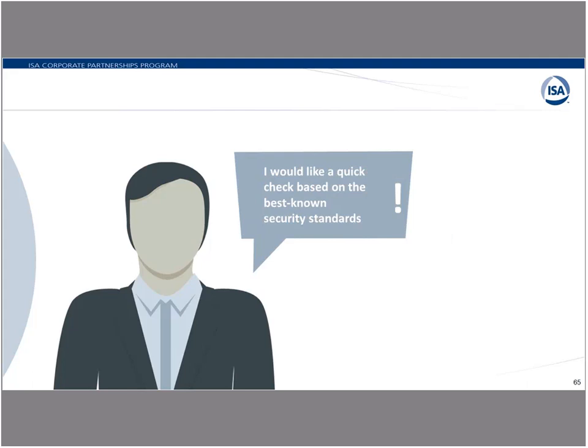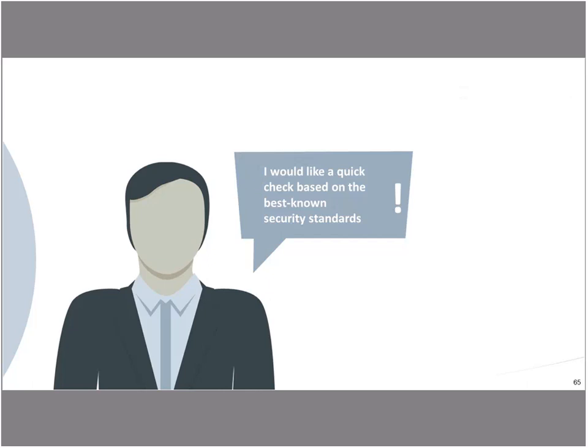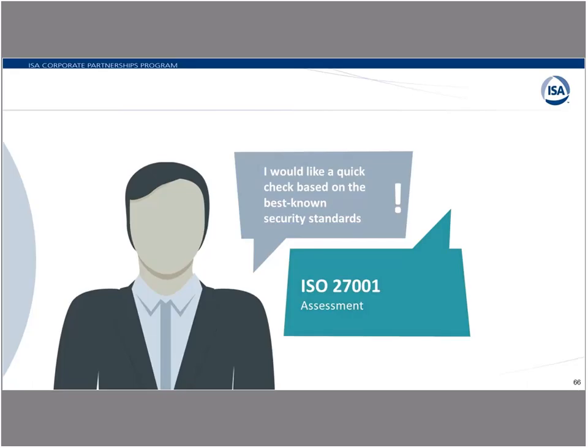The next option is a quick check based on best-known security standards using the ISO 27001 assessment. This assessment has been around for many years and was originally generated in the office IT environment, with its main goal concentrated on policies and procedures. It's not as specific to the automation environment, but you can still receive a report with all of the mitigating factors as well as a complete listing of where you're strong and where you're weak.